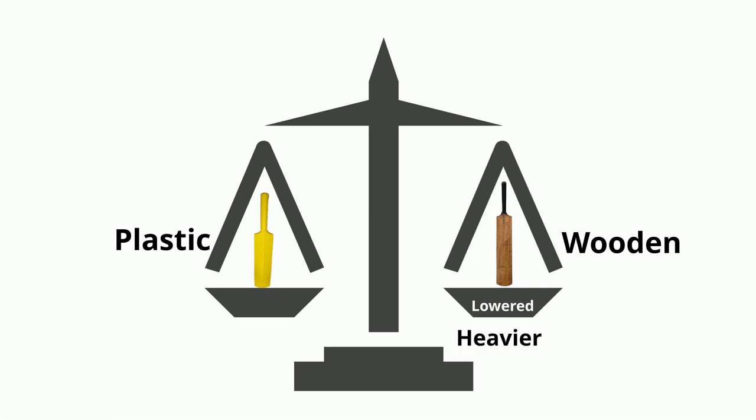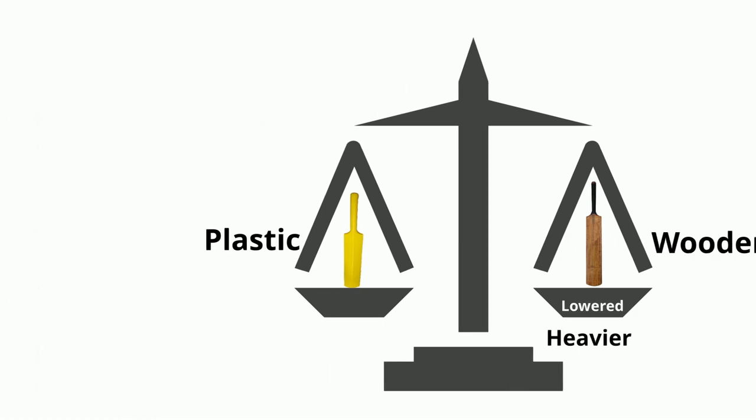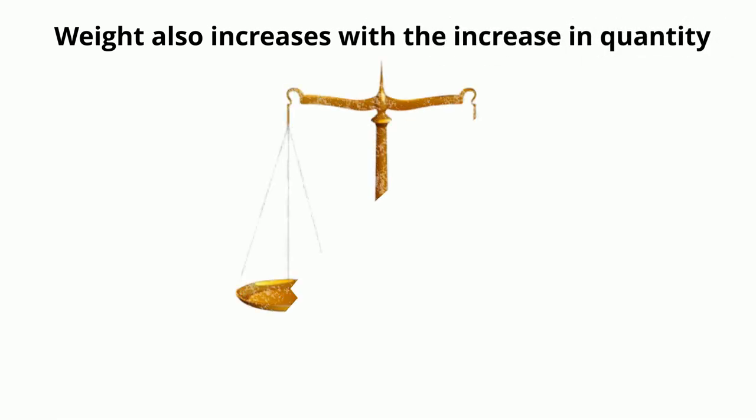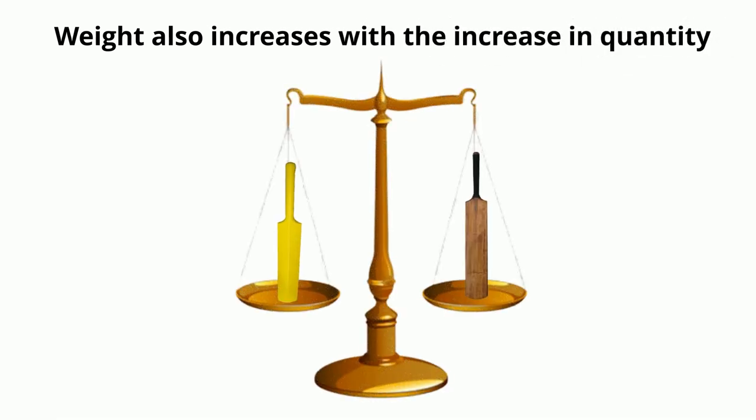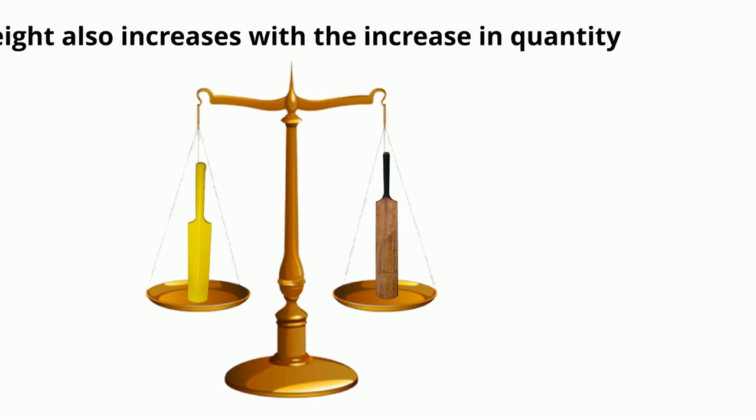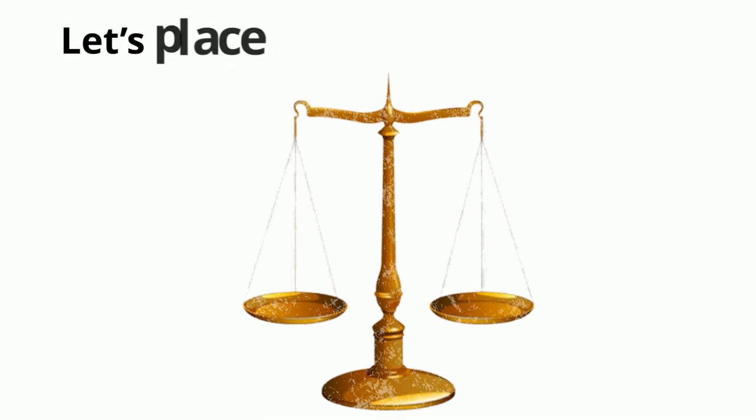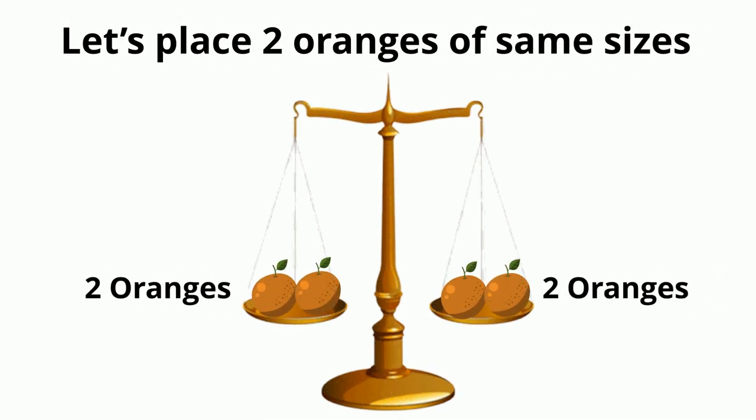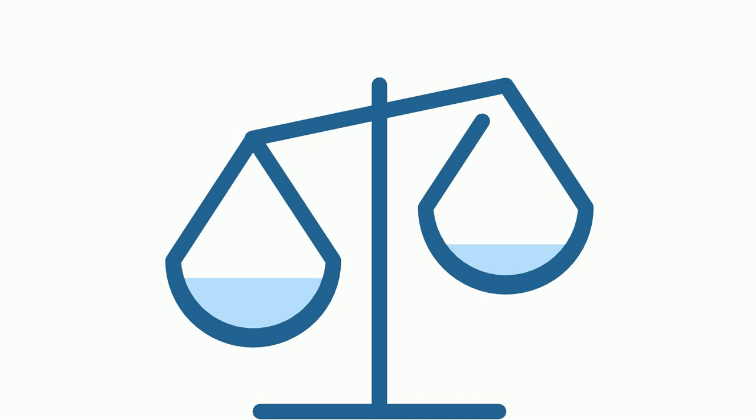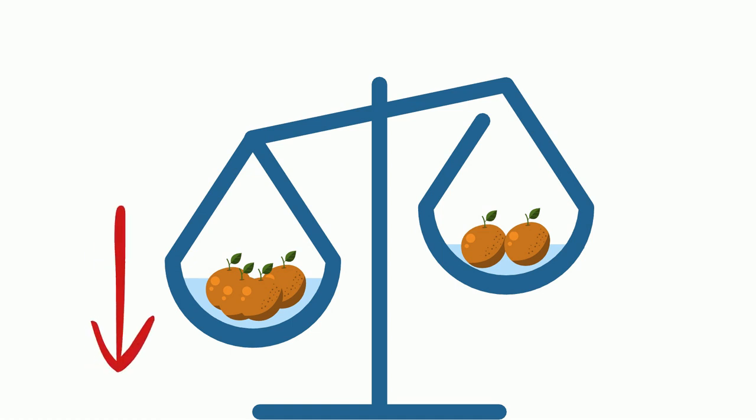The weight also increases with the increase in quantity even if the object is the same. For instance, let's place two oranges of same size in each of the two pans of the scale. You see the scale balanced. That is so because both pans have the same weight. But if we add two more oranges of the same size in the left pan, the left pan goes down and the right pan goes up.